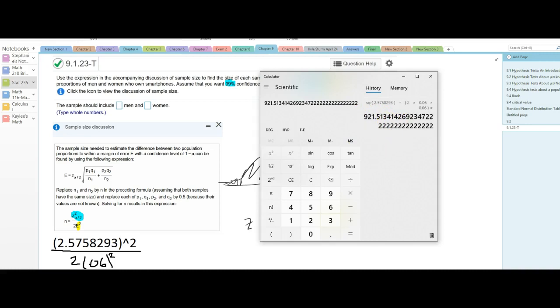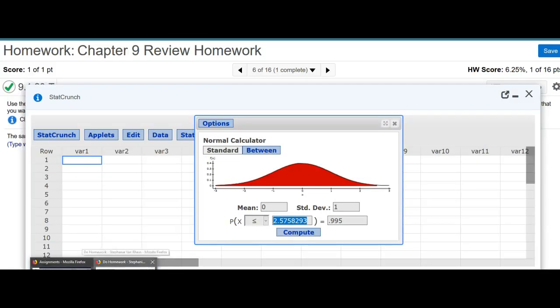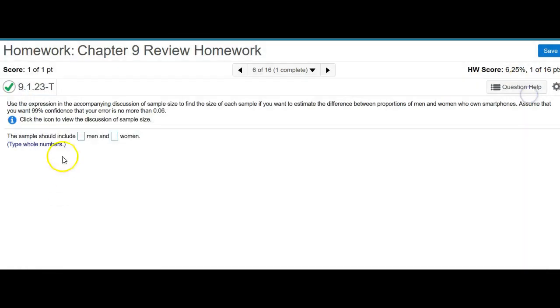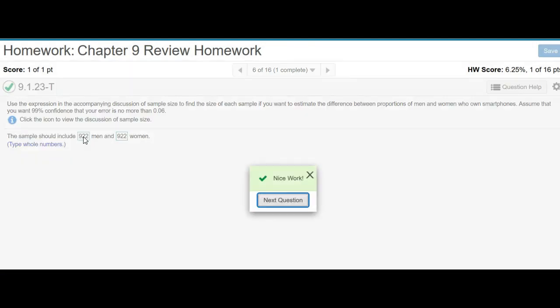So I'm going to go to put that in my question. 922. And they're going to be the same for men and women because I assume the 0.5 for each. And you can see that's correct there. So hopefully this answered how to go about this type of question.